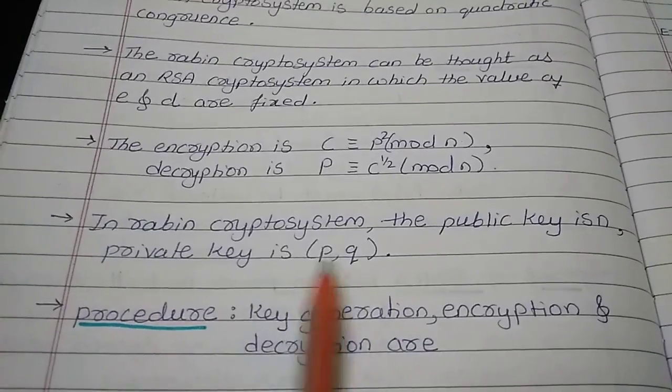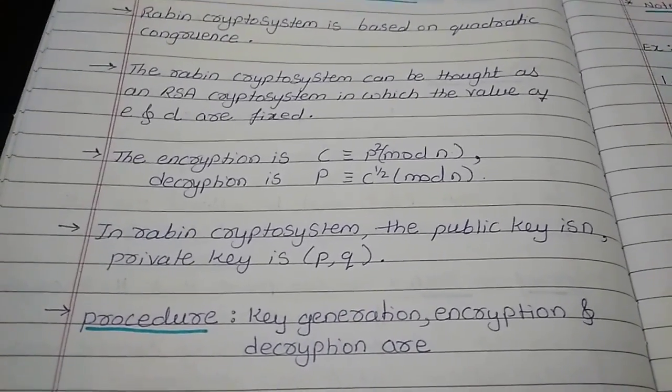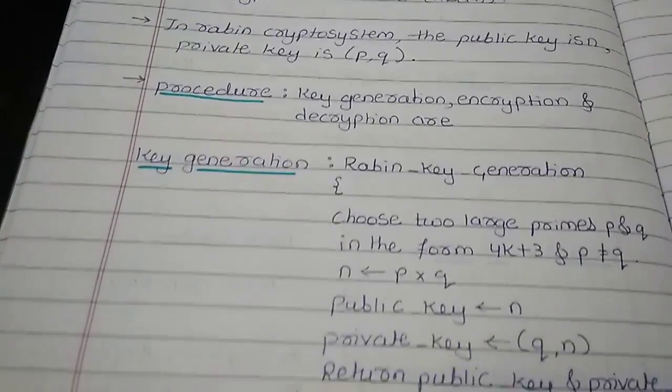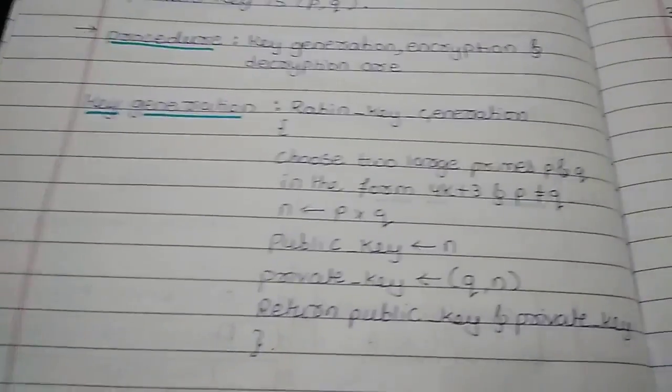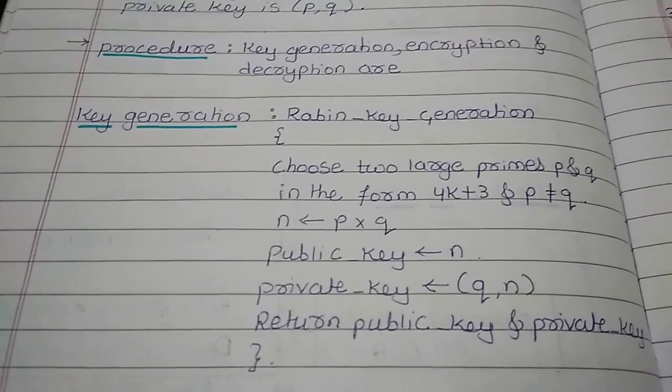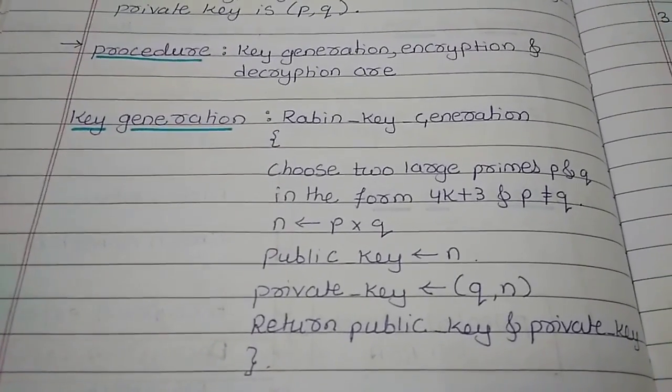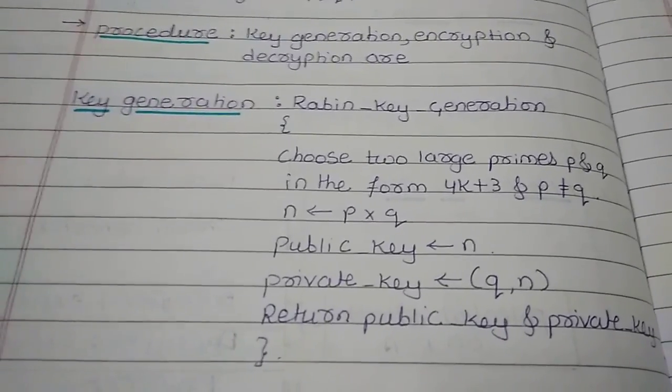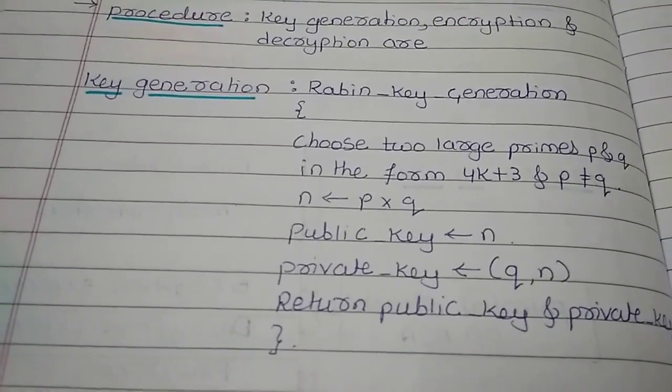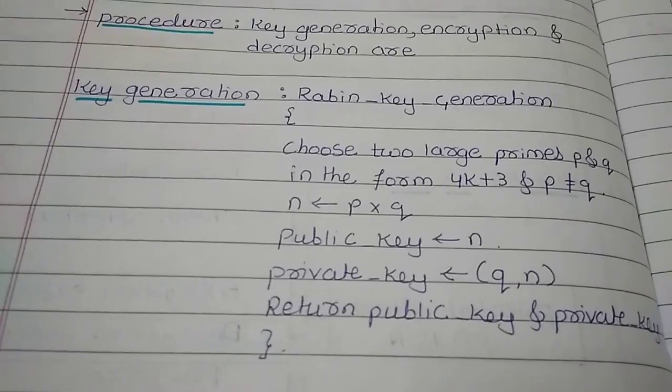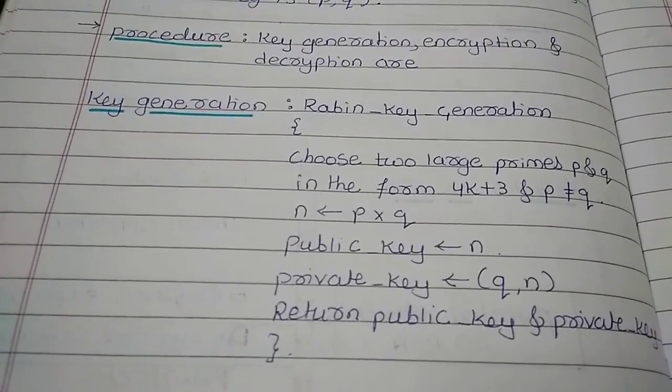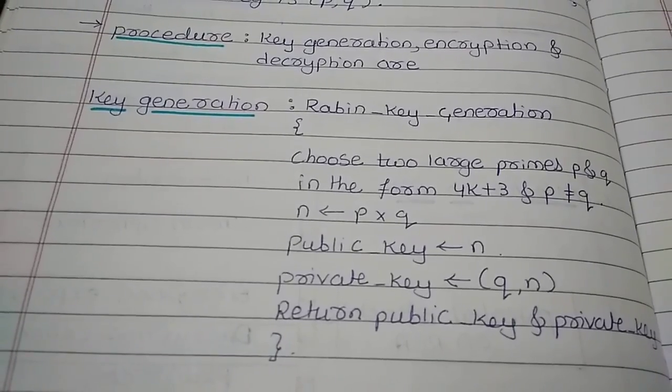Now let us see what is the algorithm or procedure for generating the key for encryption and decryption purpose. This is the key generation algorithm wherein we are going to choose two large prime numbers P and Q. And the value of P and Q should be in the form of 4K plus 3. That means when we are performing the modulo operation our remainder should be 3.